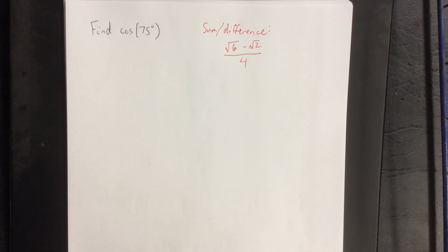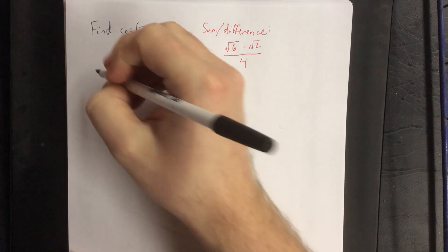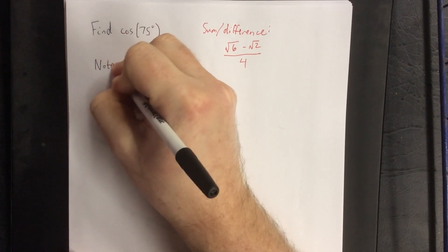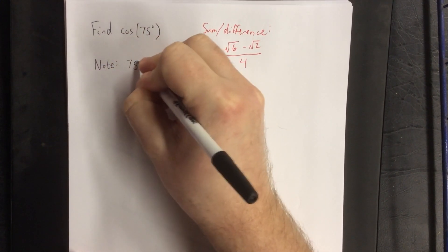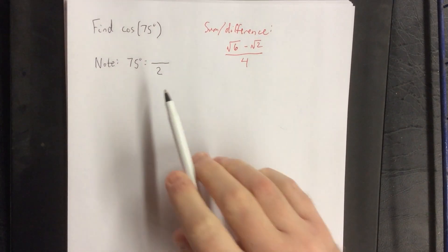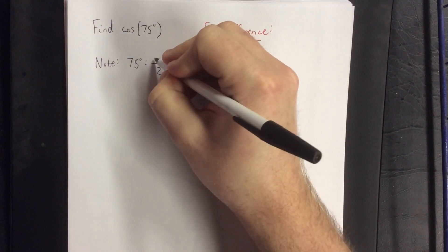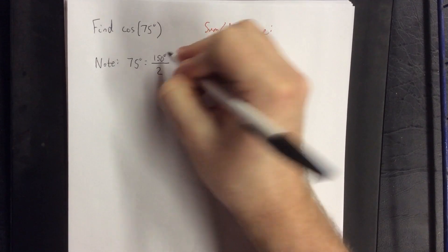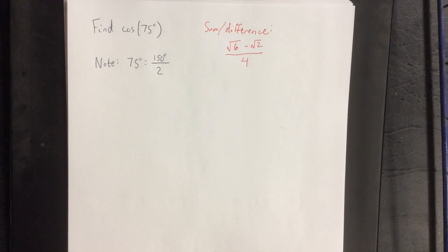I'd like to compare that to what we get by using a half angle identity. So first thing to note is 75 degrees is half of what other angle? If you were to multiply both sides by 2 and double the 75 degree angle you would get 150 degrees.